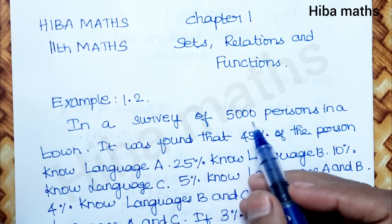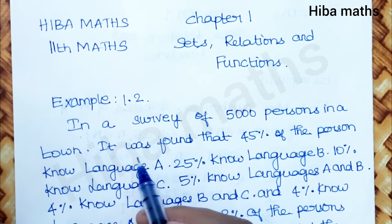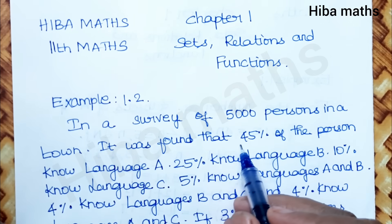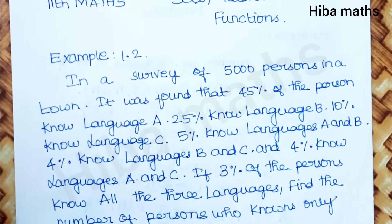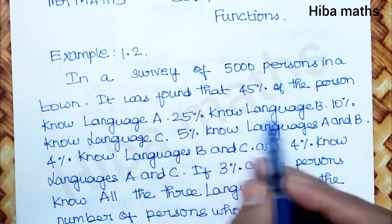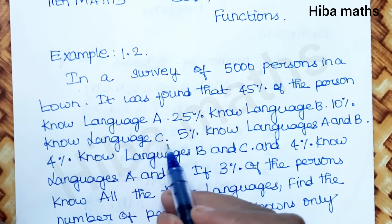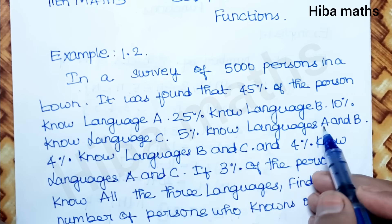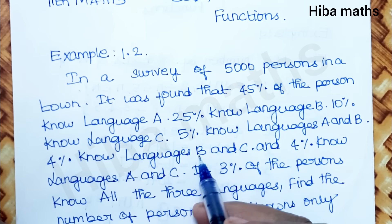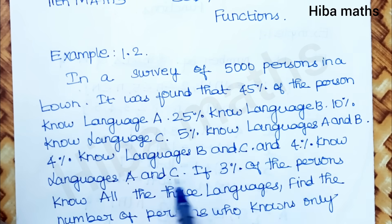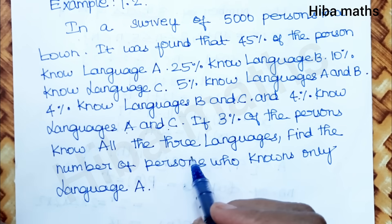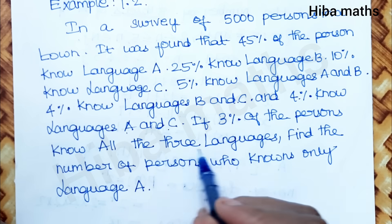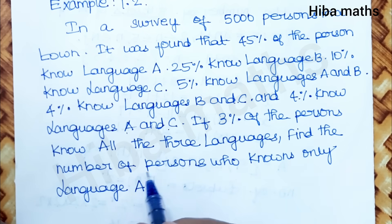In a survey of 5000 persons in your town, it was found that 45% of persons know language A, 25% language B, 10% language C, 5% know A and B, 4% know B and C, 4% know A and C. If 3% of the persons know all 3 languages, find the number of persons who know only language A.